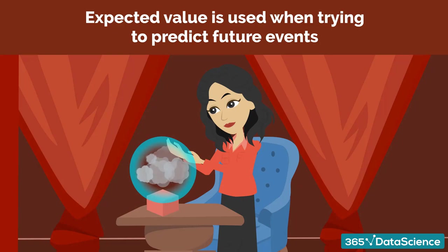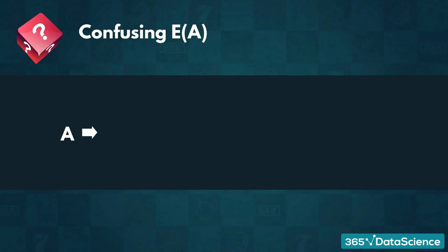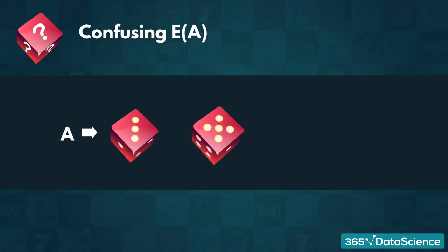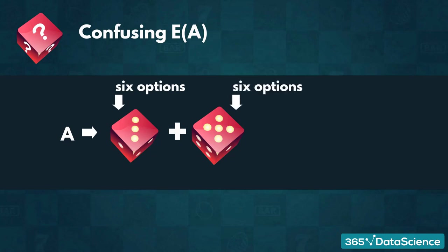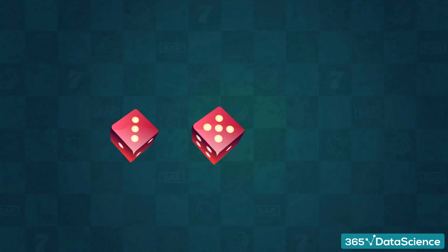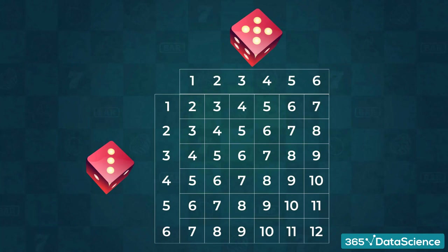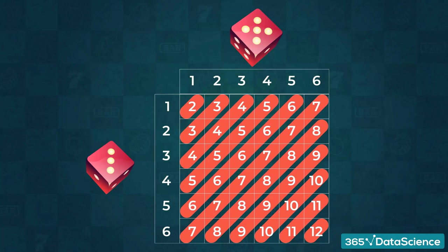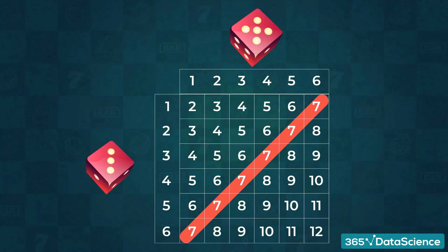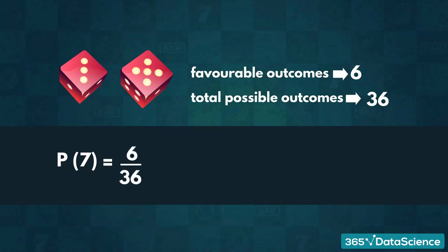So far, we have learned that the expected value is used when trying to predict future events. Sometimes the result of the expected value is confusing, or doesn't tell us much. Let us discuss a very famous example: throwing two standard six-sided dice and adding up the numbers on top. We have six options for the first die. Regardless of the number we roll, we still have six different possibilities for the second die. That gives us a total of 6 × 6 = 36 different outcomes. We can write out the results in a 6 by 6 table where we write the sum of the two dice.